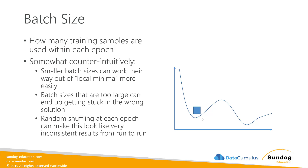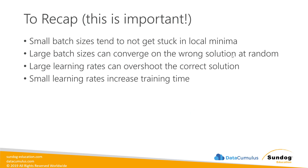Because data is randomly shuffled at the beginning of each training epoch, large batch sizes can manifest as very inconsistent results from run to run. If the batch size is just a little too big, sometimes you'll get stuck in a local minima and sometimes you won't, leading to different answers across runs. So remember: smaller batch sizes tend not to get stuck in local minima, but large batch sizes can converge on the wrong solution at random. A large learning rate can overshoot the correct solution, while small learning rates increase training time.